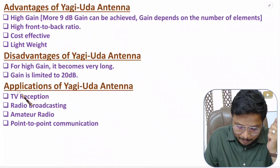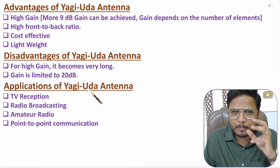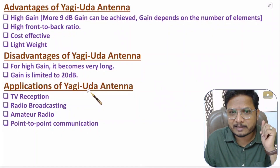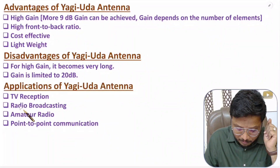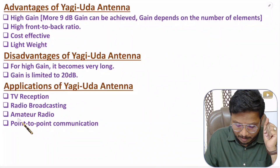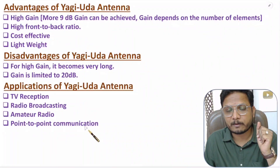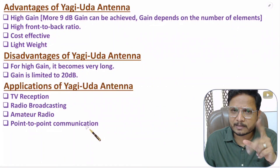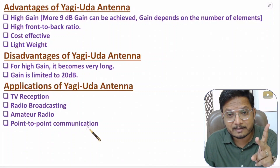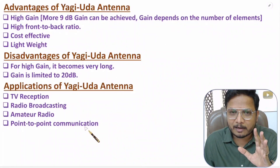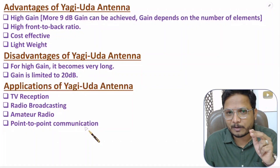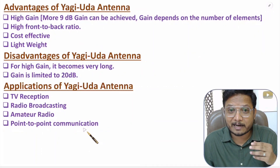As for applications, there are many. A very popular application is TV signal reception. We can also use it for radio broadcasting, amateur radio, and point-to-point communication. With Yagi, we have many applications — short distance communication (up to 100 meters), medium distance (up to 20-40 kilometers), and long distance (in terms of thousands of kilometers). When you talk in communication language, you should be clear about what is meant by short, medium, and long.